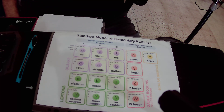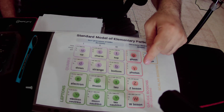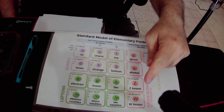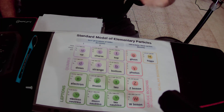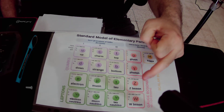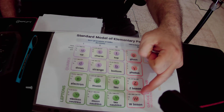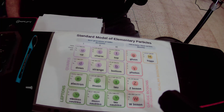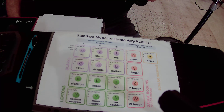Then we have the boson Z particle and boson W particle. Boson W has 2 types of particles. Boson Z and boson W carry the weak nuclear force, which is responsible for the radioactive decay of atoms.